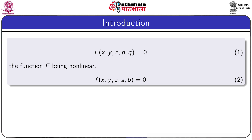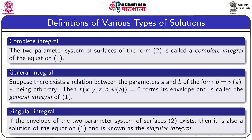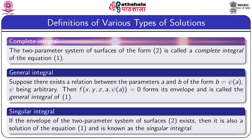Starting from equation 2 we can go to equation 1, and conversely one can prove that the solution of the first-order equation 1 is of the form given in equation 2. We shall now define the various types of solutions of a non-linear PDE. Equation 2 is a solution of equation 1 involving two arbitrary constants a and b, and this solution is called the complete integral of equation 1.